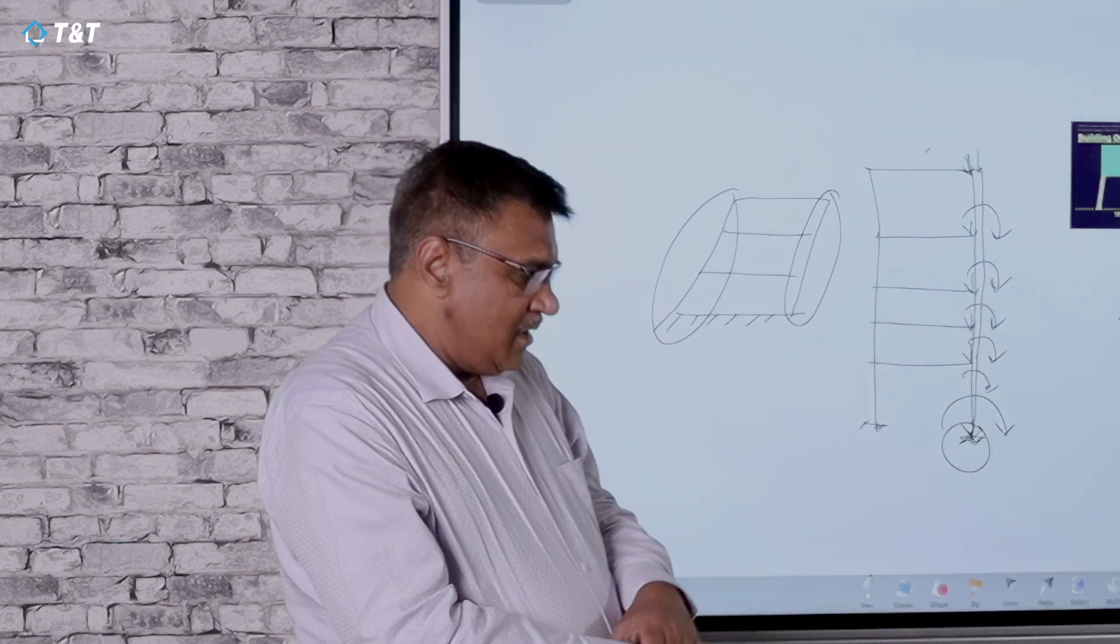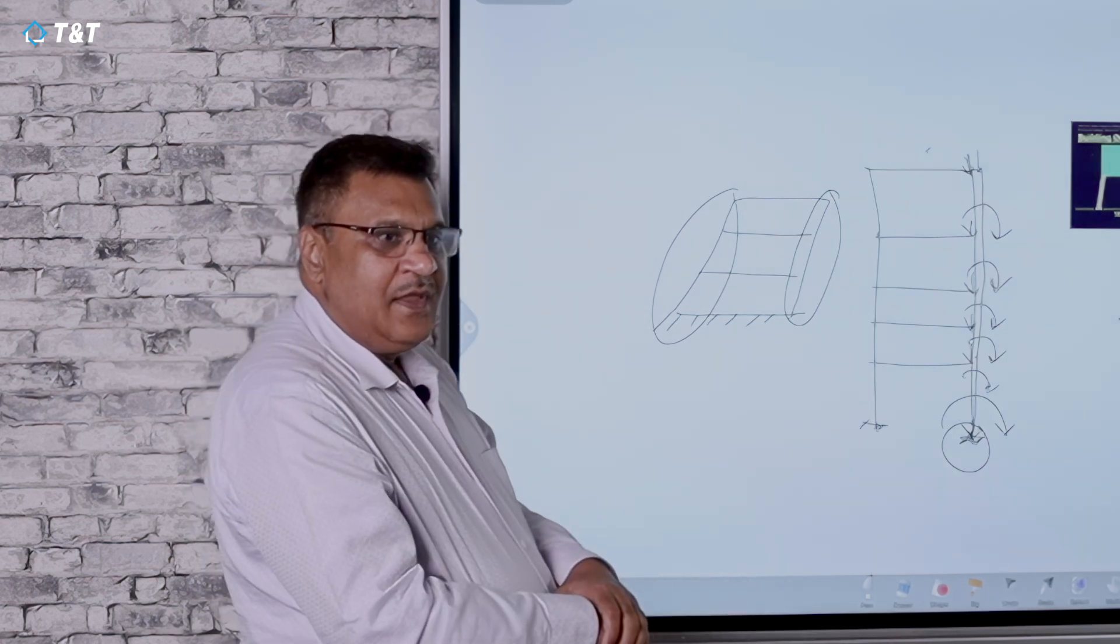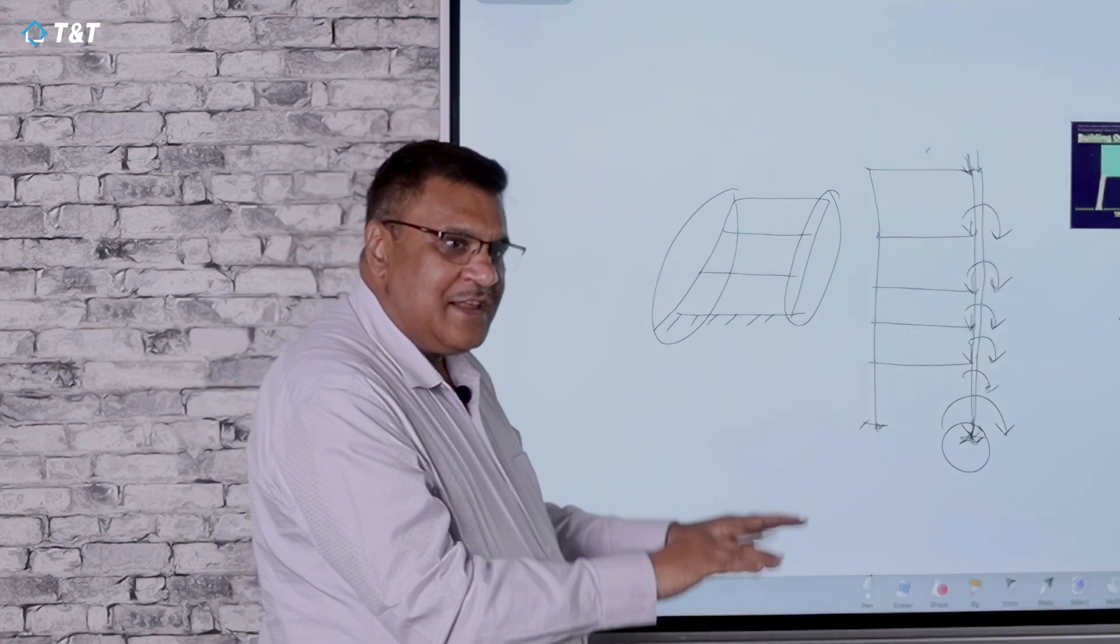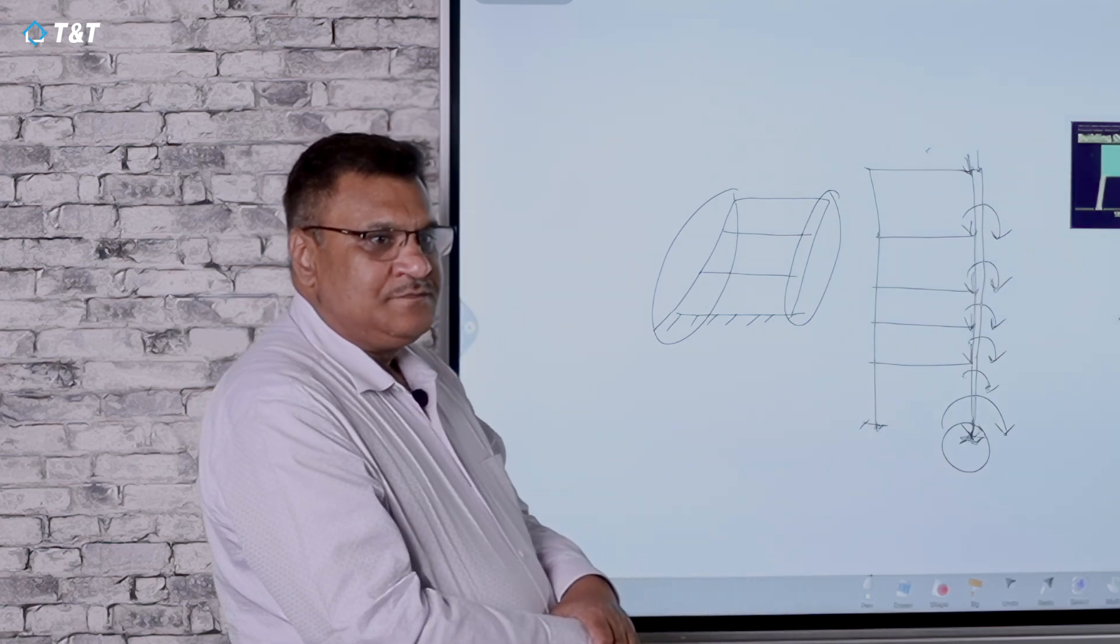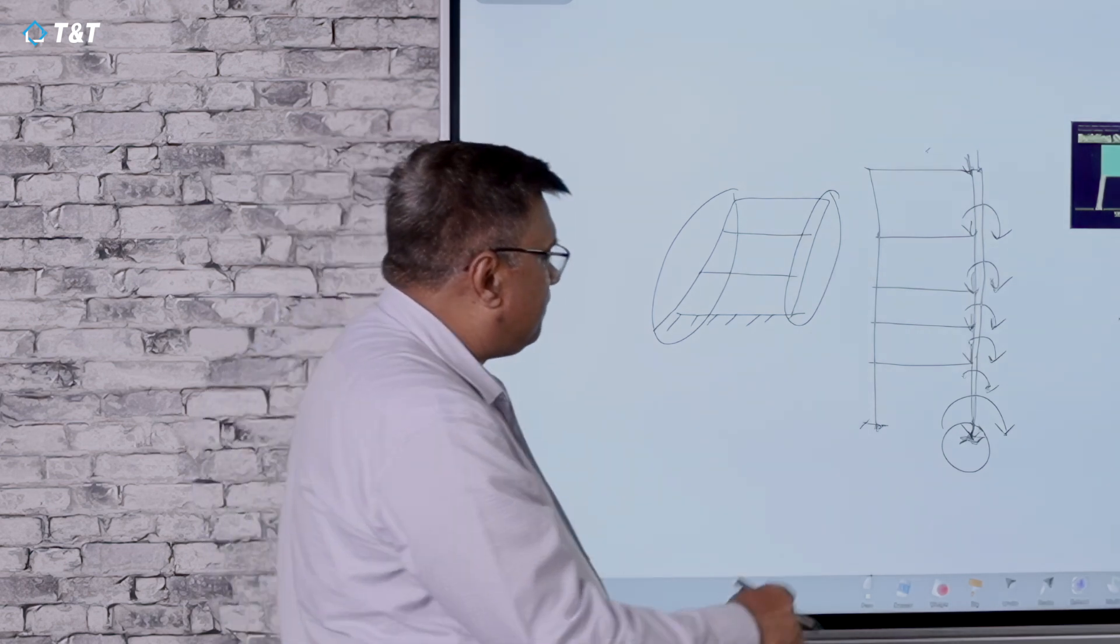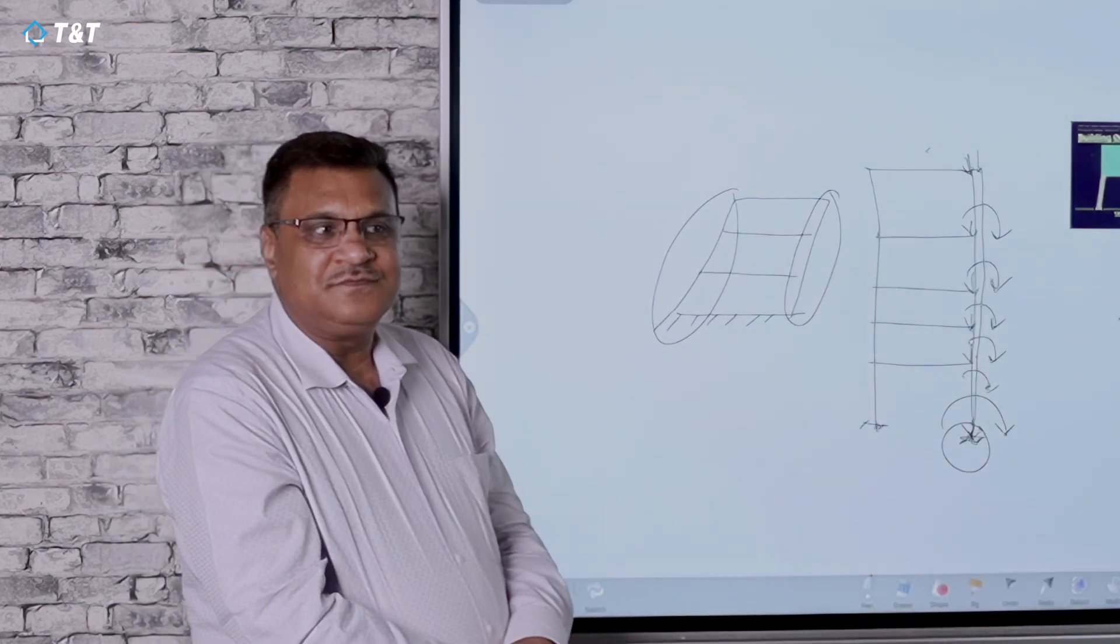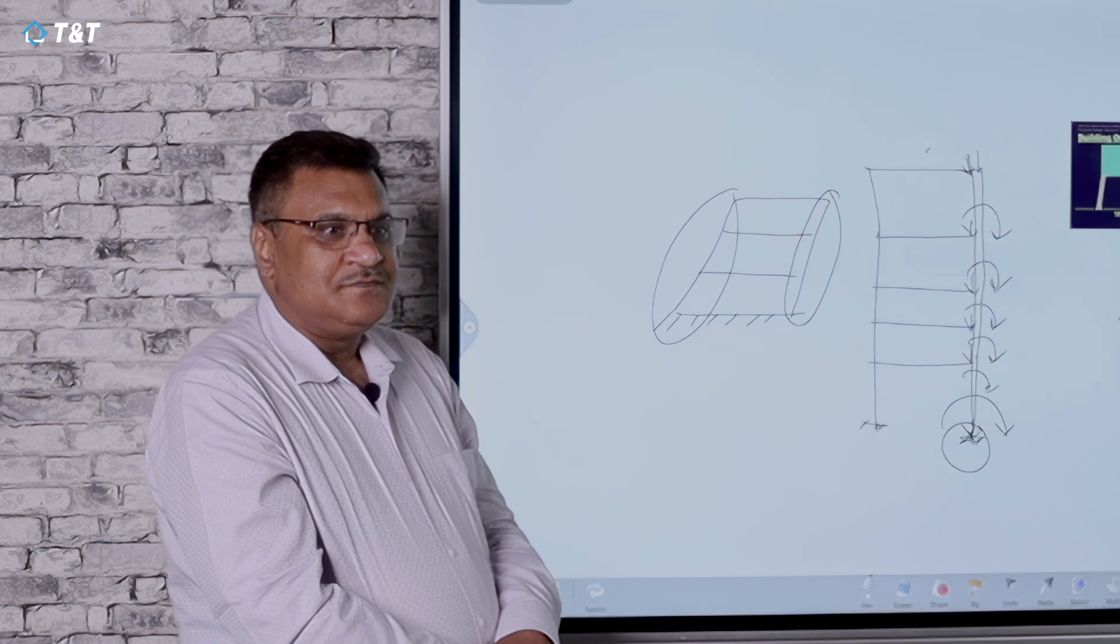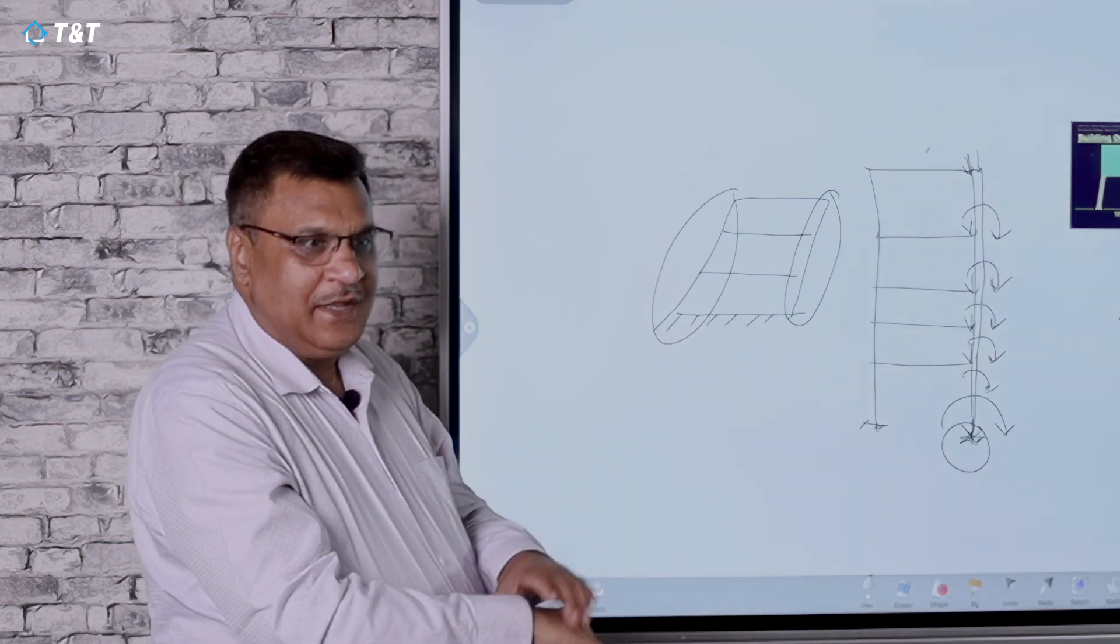When we are transferring any load to the ground, the ground acts like a spring and deflects. If we give uniform pressure to the ground, then the entire settlement will be uniform and there will be no tilting.